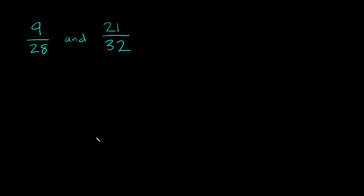What's up you friggin geniuses! In this video I'm going to teach you how to find the lowest common denominator of large fractions, basically fractions that have big denominators. So as you can see here we have 28 and 32. A method we can use to find the least common denominator between these two is the prime factorization method. If you don't know what that is, I'll link a video in the card above. But if you're good, let's jump into this example.